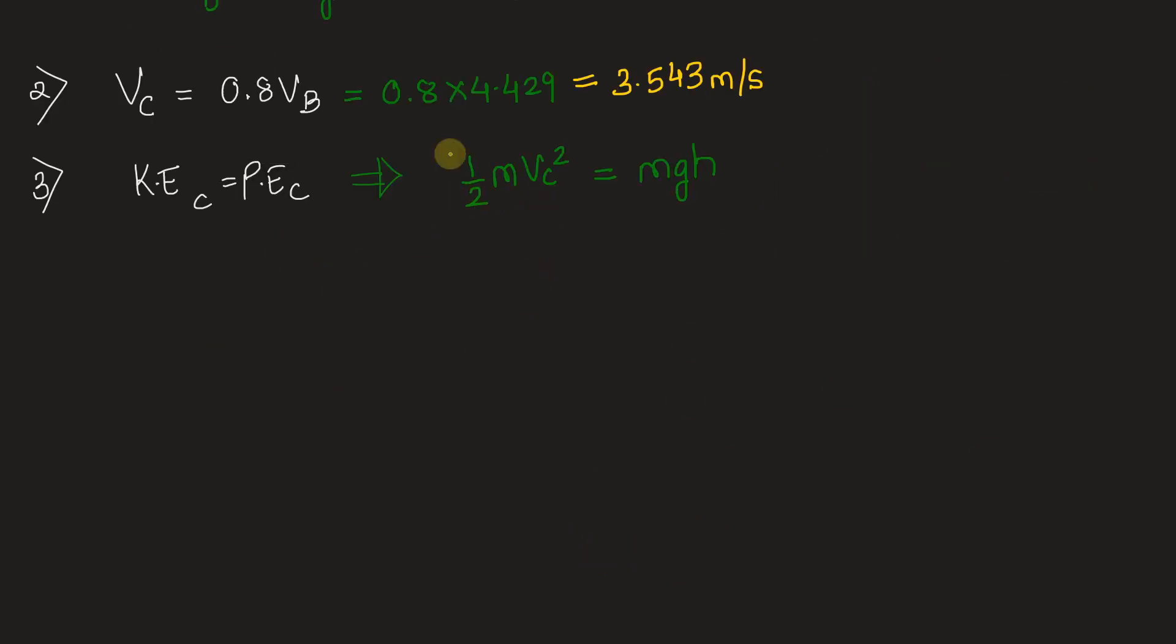Let's put the values and further simplify this. We have M getting cancelled on both sides. Put the value of VC. We have 3.543 square divided by 2 into 9.81. This is calculated as 0.6399.